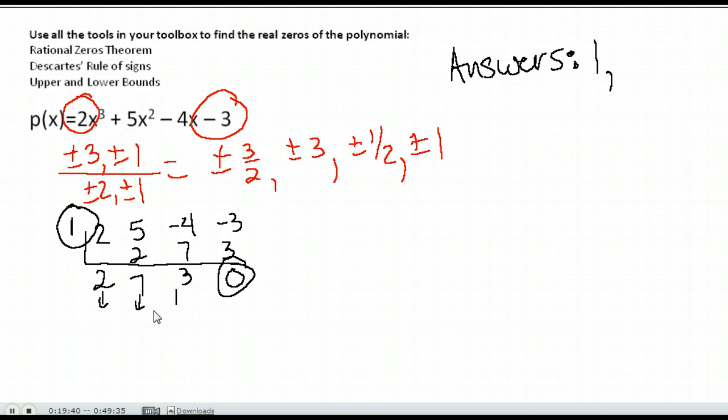And then what we're going to do is take what's left over, because this started as third degree, dividing at one time drops it to squared. So I have 2x squared plus 7x plus 3. And what I want to do from here is I want to go ahead and factor that, if I can factor it.